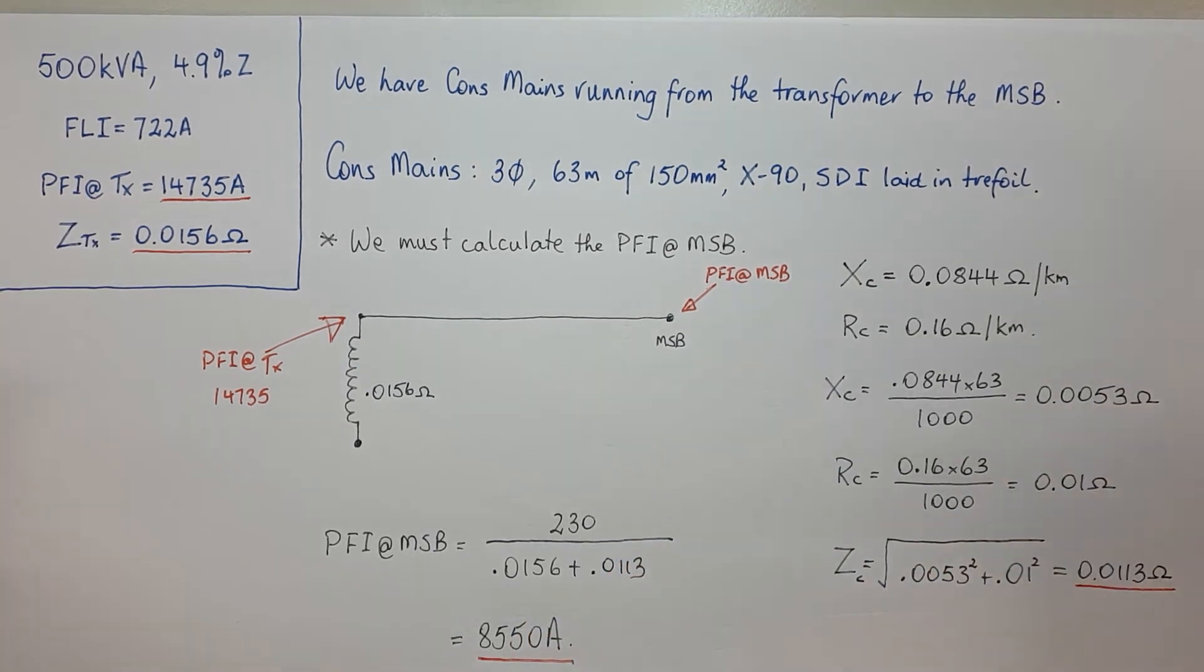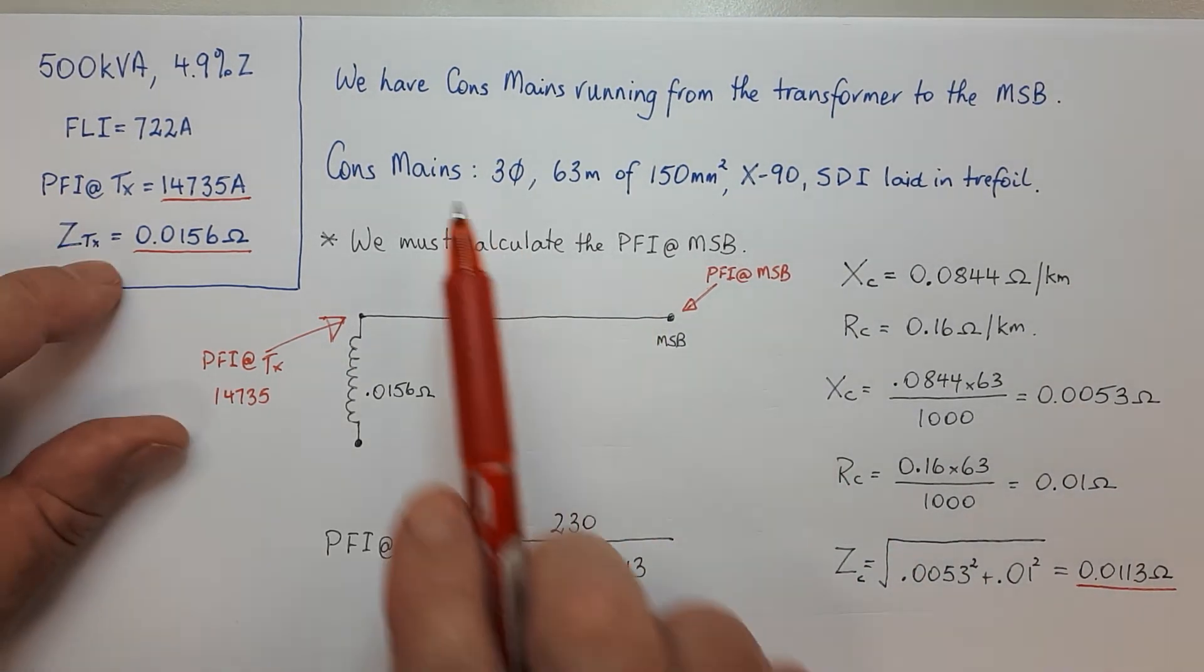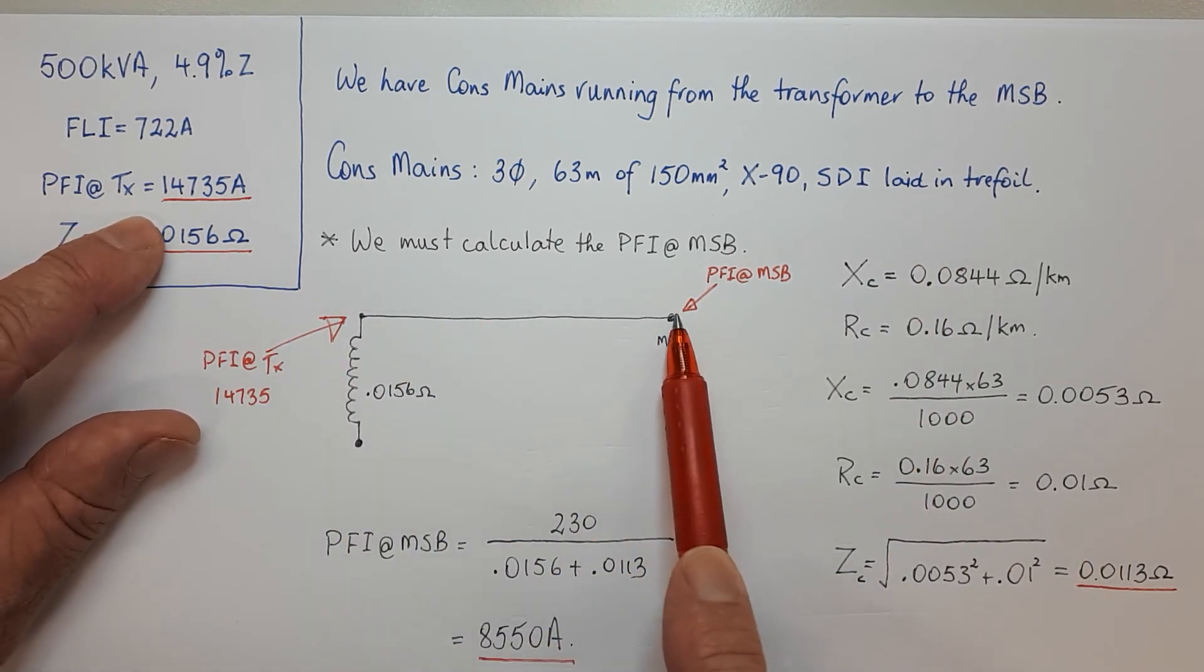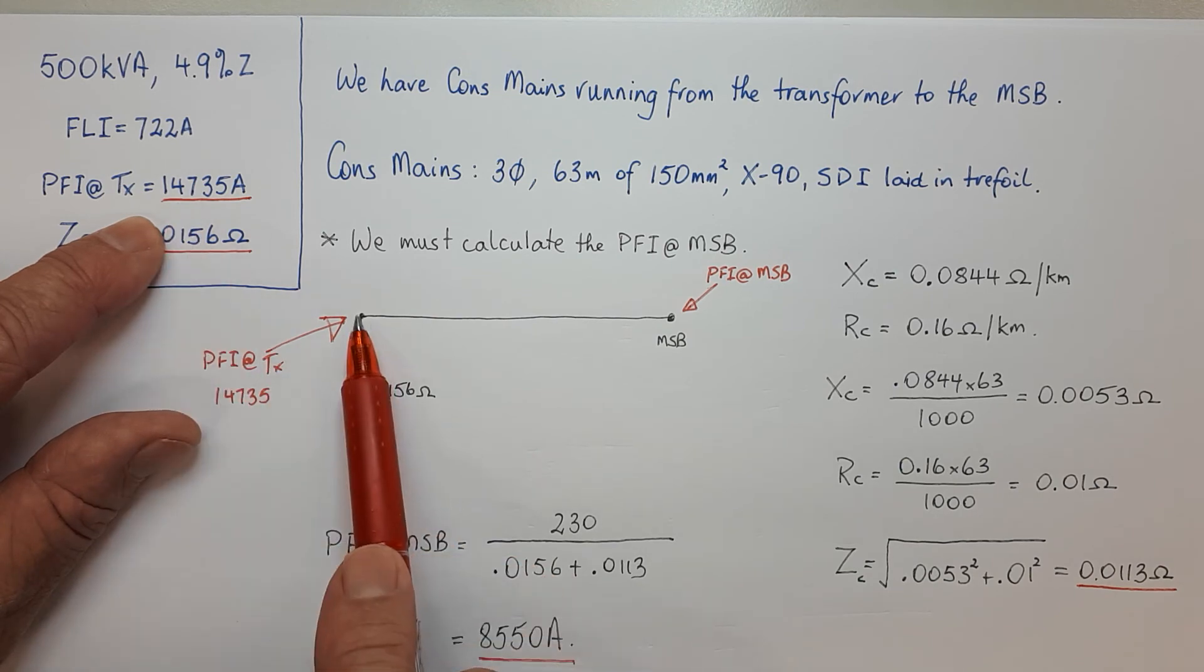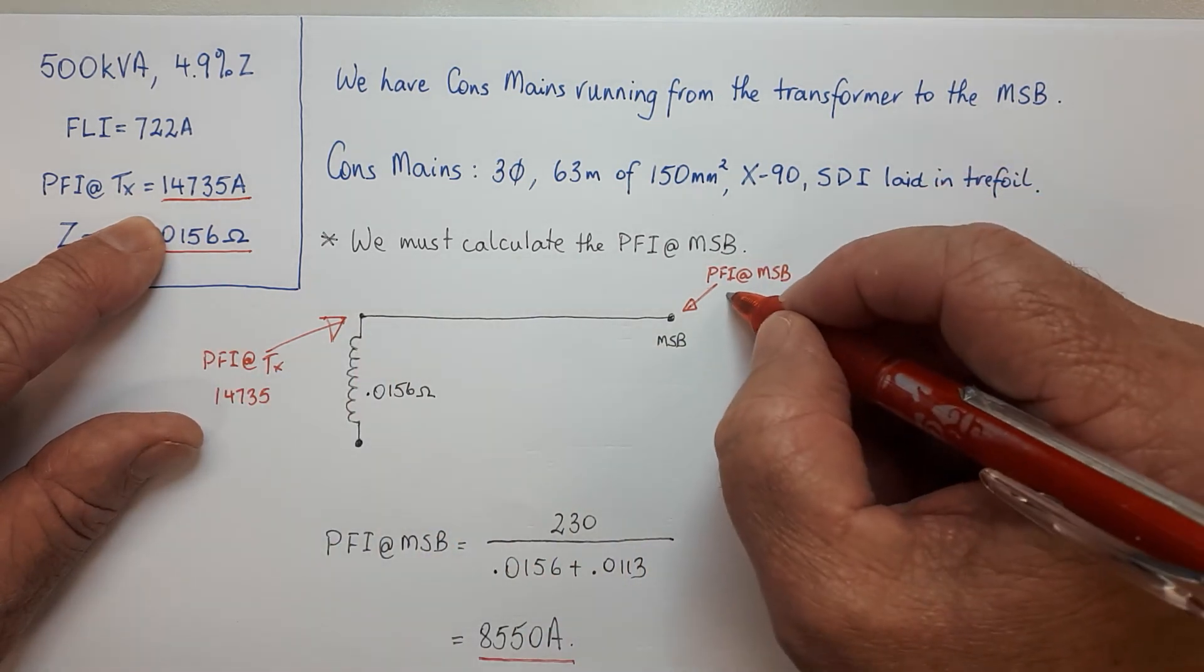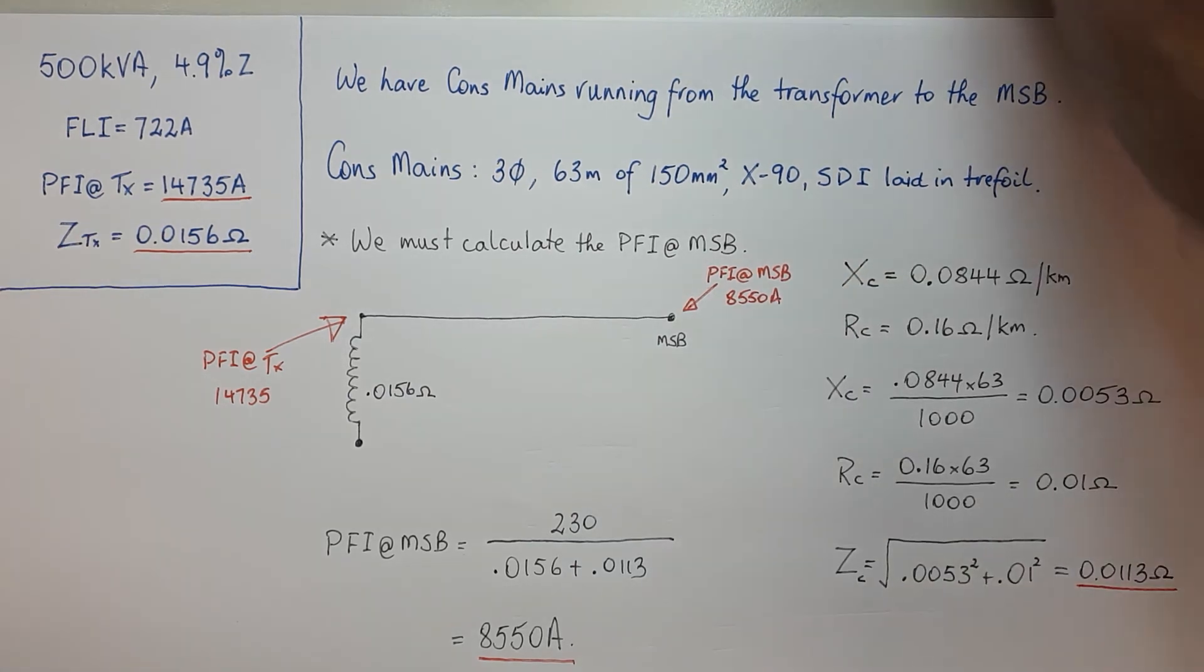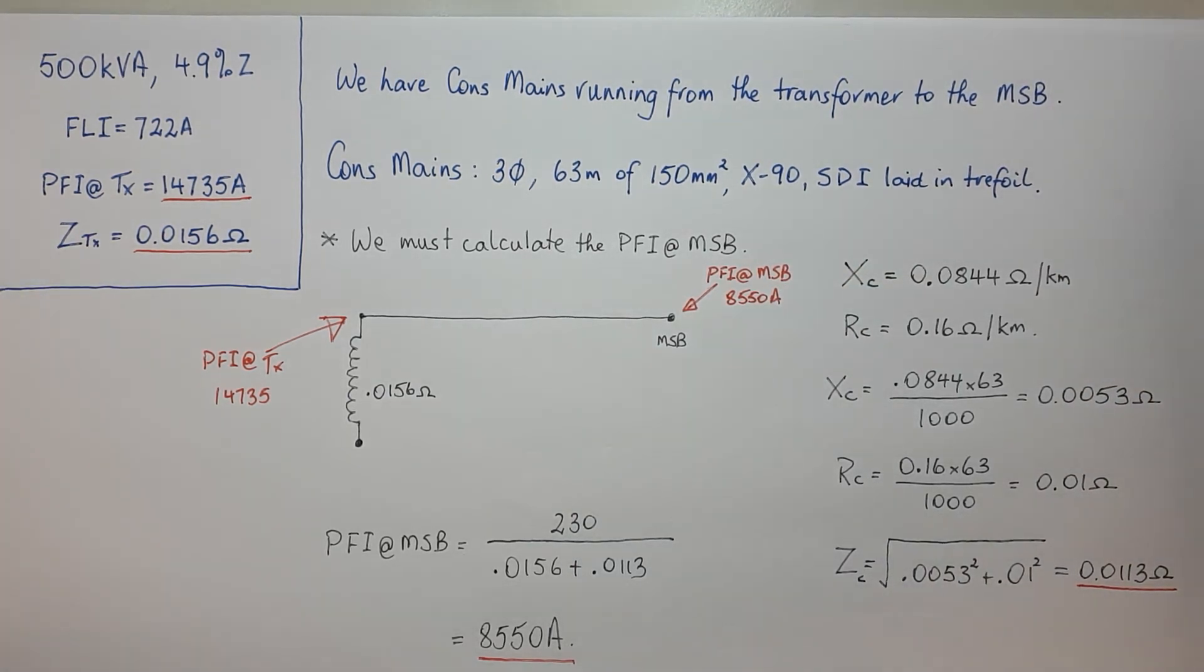So that means because of the cable we put in, the prospective fault current here is a lot less than it was at the transformer. It's 8,550, and the reason that's important is that we can say at the end of all of that, therefore...